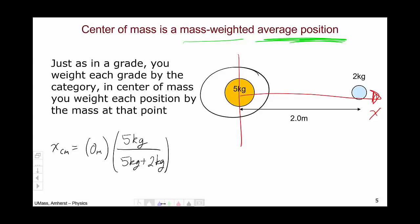I then move on to my 2 kilogram object. My value is 2 meters, because that's the location of the object. And then my weight is 2 kilograms, divided by the total, which is, again, 5 kilograms plus 2 kilograms.